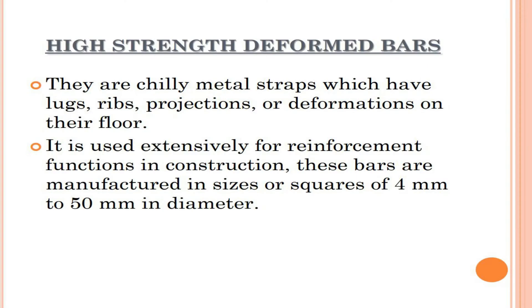High strength deformed bars are cold steel straps which have lugs, ribs, projections, or deformations on their surface. They are used extensively for reinforcement functions in construction. These bars are manufactured in sizes of 4 mm to 50 mm in diameter or square sections.